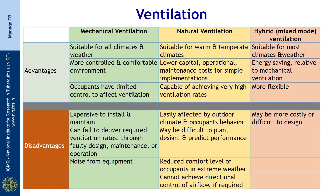Mechanical ventilation is suitable for all climates and weathers, offering a more controlled and comfortable environment, though occupants have limited control over ventilation. Its disadvantages include high cost to install and maintain, potential failure to deliver required ventilation rates due to faulty design, maintenance, or operations, and noise from equipment. Natural ventilation is suitable for warm and temperate climates, requires lower capital and maintenance costs for simple implementations, and is capable of achieving very high ventilation rates. However, it is easily affected by outdoor climate and occupant behavior, may be difficult to design and predict, reduces occupant comfort in extreme weather, and cannot achieve directional control of air flow.